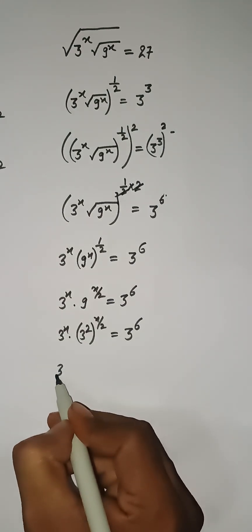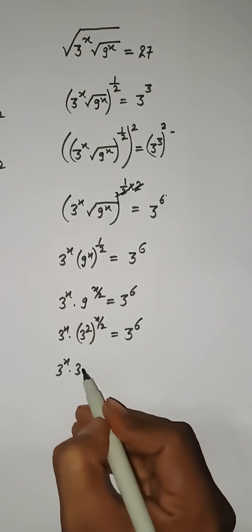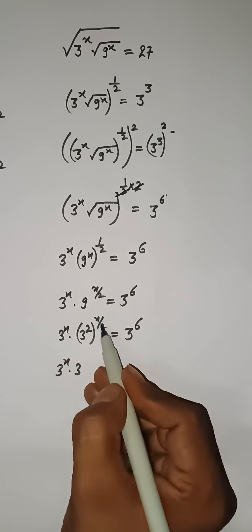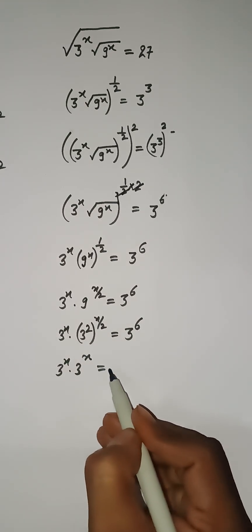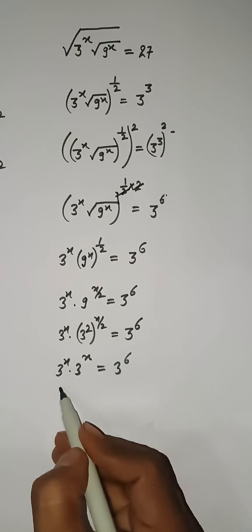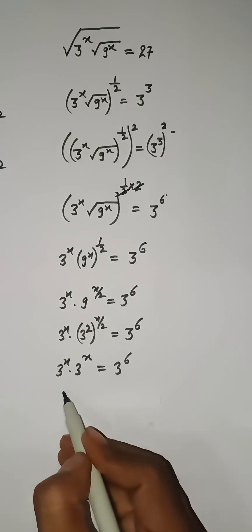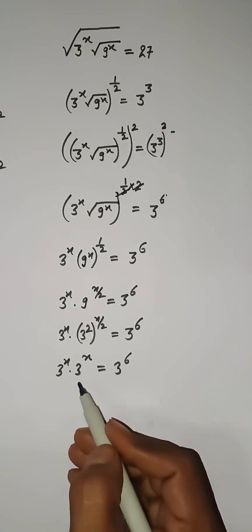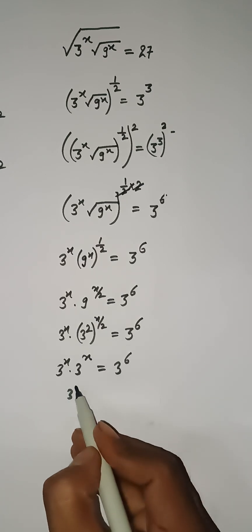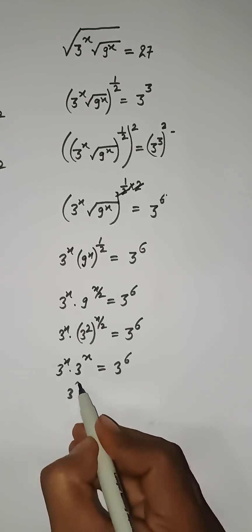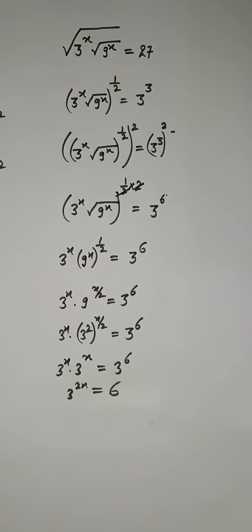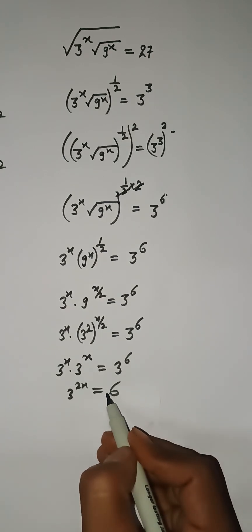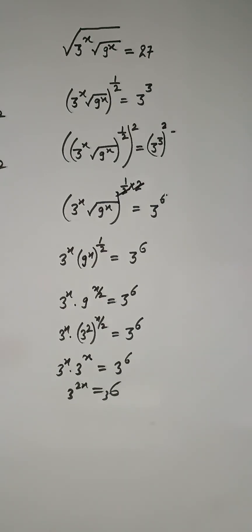Here we have 3 to the power x, and here we have 3 to the power x, and 3 squared is going to multiply with x by 2, so we have only x. Since the bases are the same, we can add their exponents, so here we have 3 to the power 2x equal to 3 to the power 6.